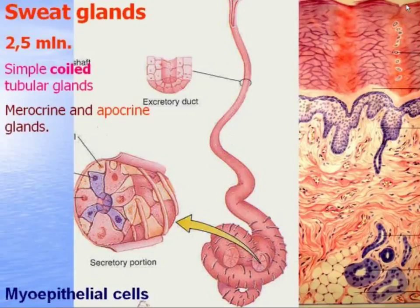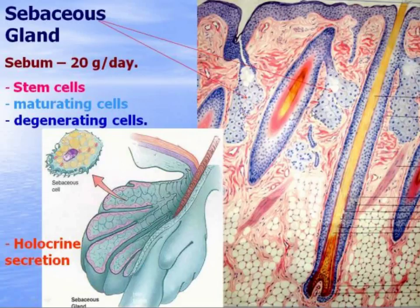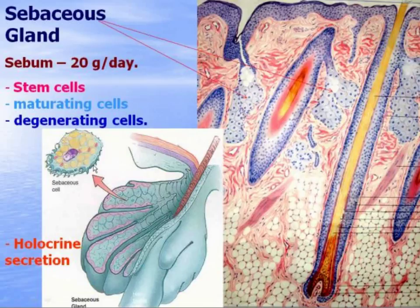Sebaceous glands are located more superficially. They are simple branching alveolar glands. The secretory cells are called sebum cells because they secrete sebum, which is released onto the surface of the skin and hair to protect and lubricate it.